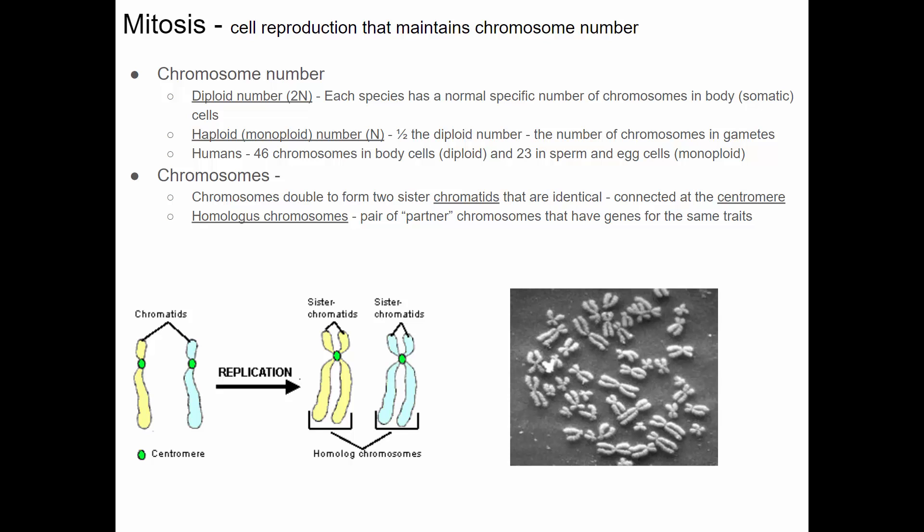Mitosis is a type of cell reproduction that makes basically identical genetic copies of a cell. It maintains chromosome number. Each cell of an organism has a characteristic number of chromosomes. Normal human body cells have 46 chromosomes — 23 from the mother and 23 from the father, so 23 pairs of chromosomes for 46 total. We call cells that have pairs of chromosomes diploid cells, abbreviated 2N. Humans have a diploid number of 46.